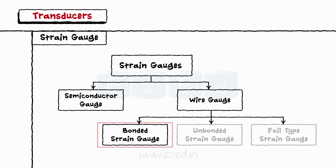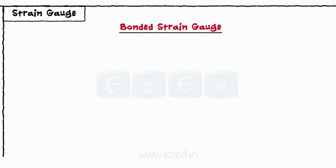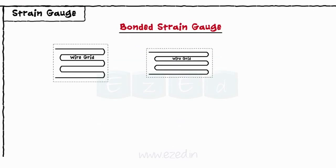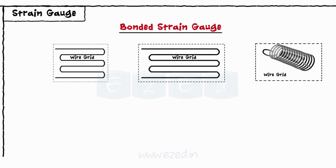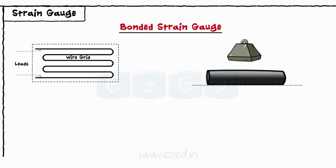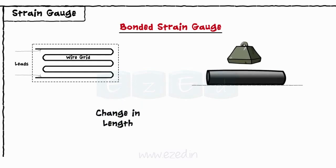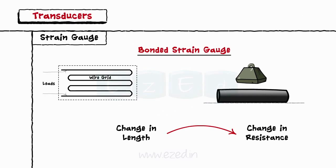We will only focus on bonded strain gauge. These gauges are bonded with cement to the surface. The shape of the wire grid can be square, rectangular, circular, etc. Bonded strain gauge has two leads for external connections which are isolated from each other. As the gauge wire changes its length, its resistance changes and the corresponding change in resistance gives us the required output.